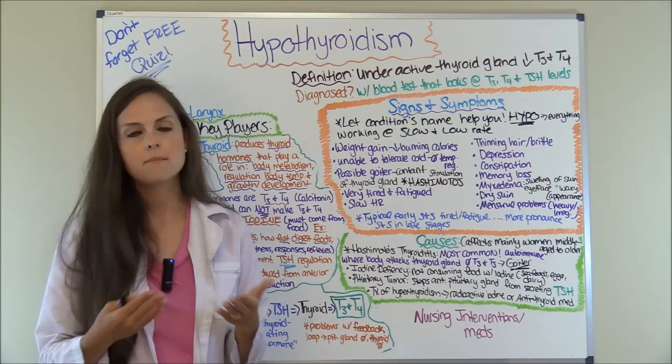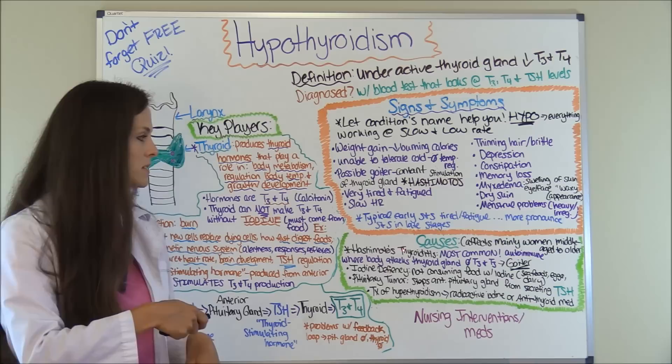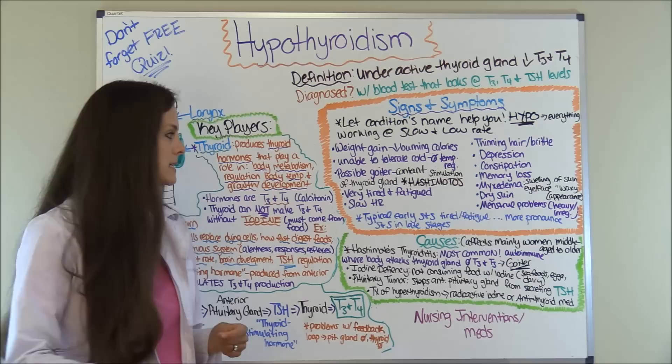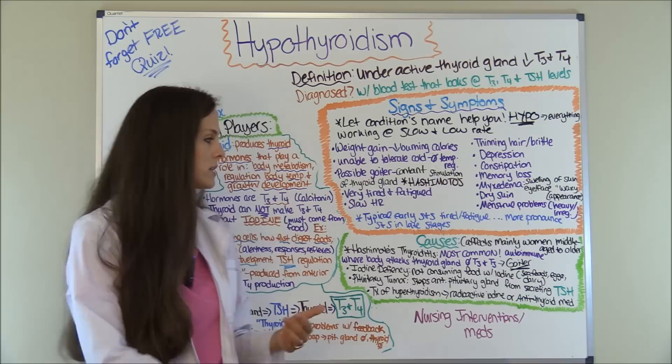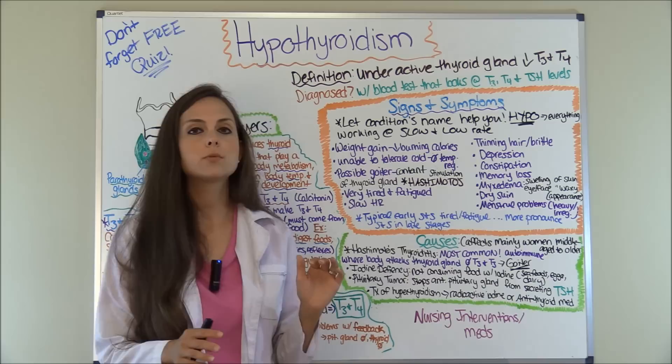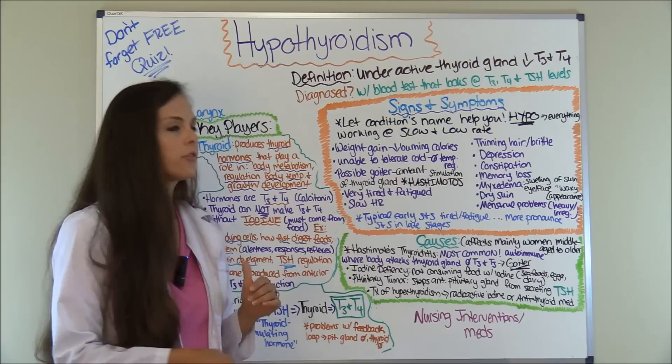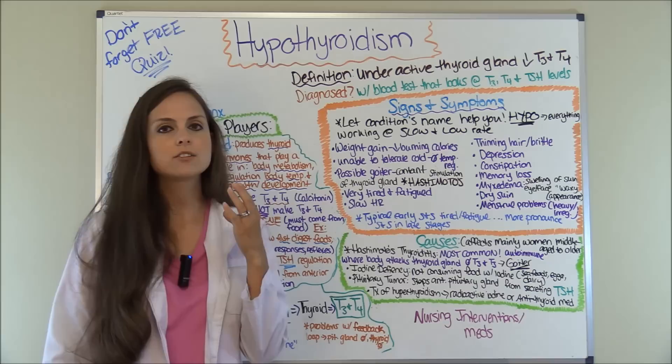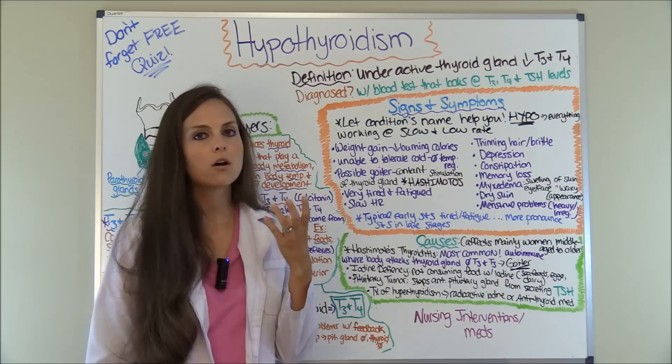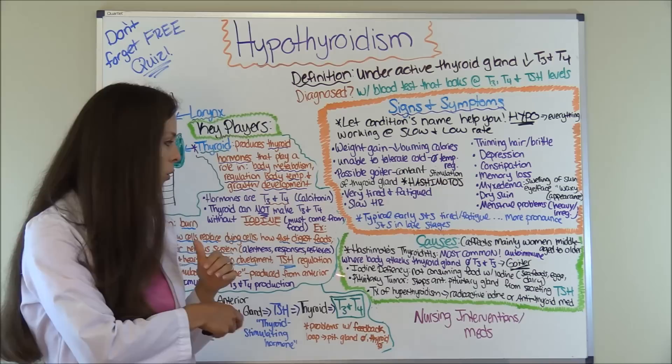Hypothyroidism mainly affects women, middle age to older adults. The most common cause is Hashimoto's thyroiditis — an autoimmune condition where the body attacks its own thyroid gland, causing it to stop producing T3 and T4. Patients with Hashimoto's will likely have a goiter because the anterior pituitary gland keeps trying to stimulate the thyroid to produce T3 and T4, but the gland can't respond, leading to swelling of the neck. That goiter is a telltale sign of Hashimoto's.